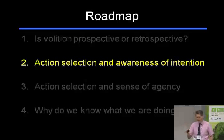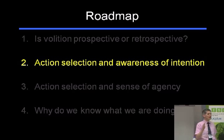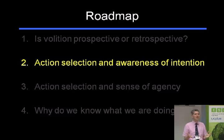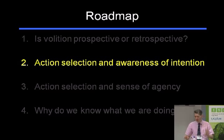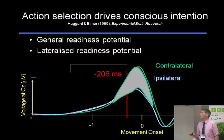I want to move onto more recent work suggesting that the experience of intention and of what we're about to do is profoundly linked to the question of: am I going to do A or B? Am I going to select this action or the other? This is concerned with what one might call free choice. We recently wrote a paper called the What, When, Whether Model of Intentional Action. When you make an action, you need to decide what to do, when to do it, and whether you're actually going to do it at all. What I want to do is describe some data which suggests that the process of selecting between alternative actions drives the experience of action.